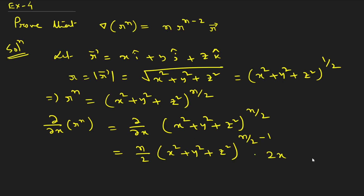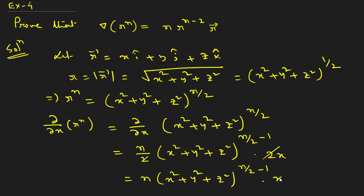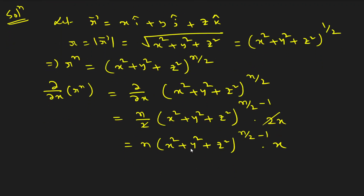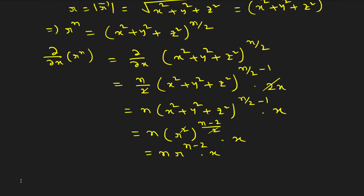The 2's cancel, giving n · (x² + y² + z²)^(n/2 − 1) · x. Since x² + y² + z² = r², we write this as n · r^(n−2) · x. Similarly, ∂(rⁿ)/∂y = n · r^(n−2) · y and ∂(rⁿ)/∂z = n · r^(n−2) · z.